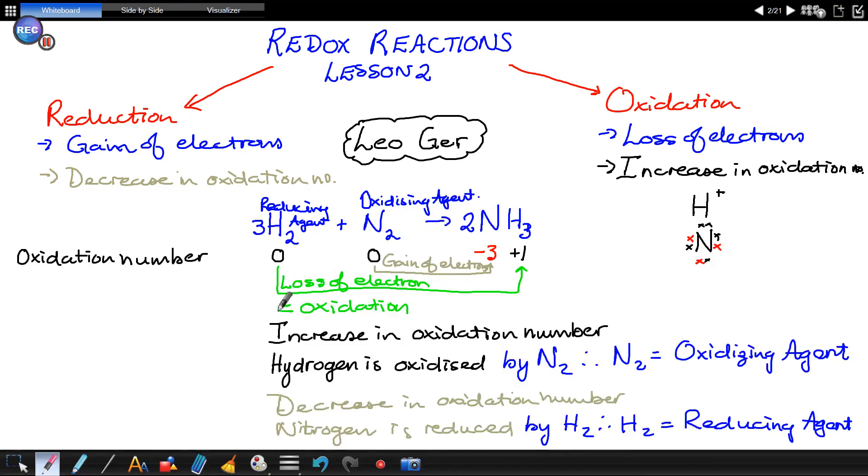Alright. So, we can use oxidation numbers to identify redox reactions. And we can identify the oxidation as well as the reduction half of the redox reaction. And we can identify the reducing agent as well as the oxidizing agent. Alright. I think this is enough for one session. I'll work through some more examples in the next video. Thank you for watching my videos.